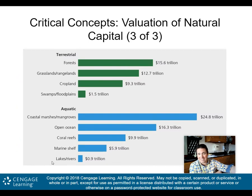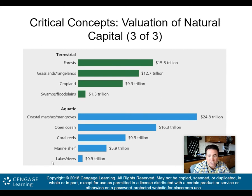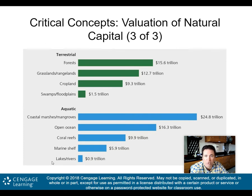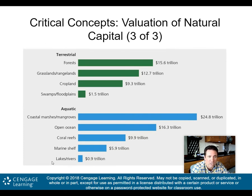Robert Costanza and his colleagues put values on some of these biomes. Look at the terrestrial biomes: forests are over $15 trillion, grasslands and rangelands over $12 trillion, croplands $9 trillion.